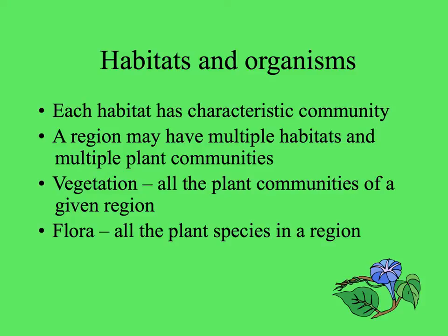Every habitat has a characteristic community — species that have a variety of life forms and ways of making a living. In any region, there can be multiple habitats and a bunch of different plant communities. The word vegetation is used to describe all the plant communities of a given region, while flora is a more taxonomically oriented term referring to all the plant species in a given region.